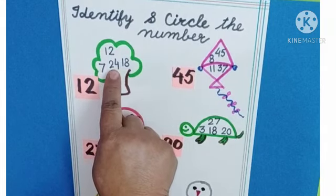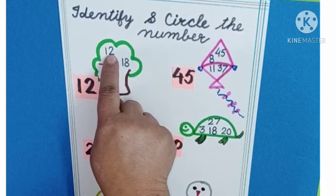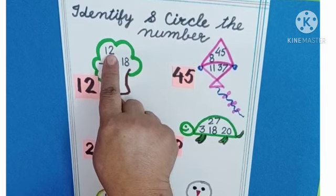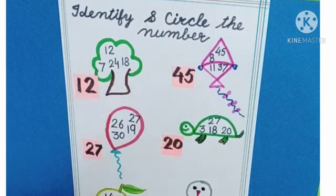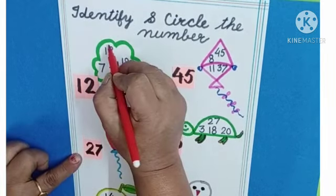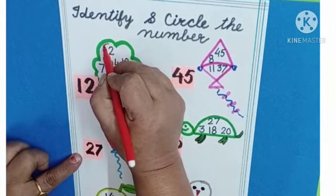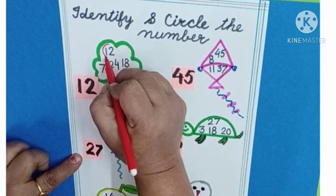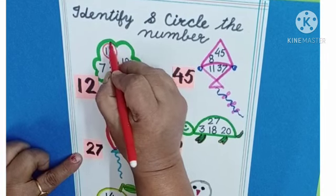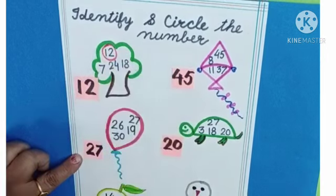No. This is? No. Is this number 12? Yes. We will circle number 12. 1 to 12.